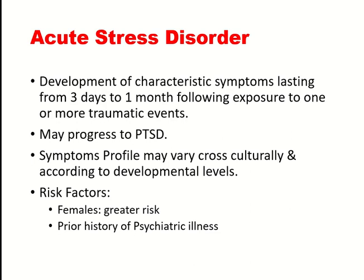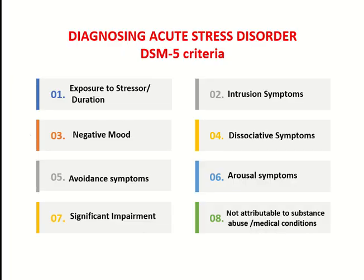For diagnosis of acute stress disorder in DSM-5, there needs to be exposure to a stressor with symptoms present for three days to one month following that exposure. Intrusion symptoms must be present, including recurrent intrusive distressing memories of the traumatic event, recurrent distressing dreams related to the event, and sometimes dissociative reactions like flashbacks. There can also be intense and prolonged psychological distress in response to internal or external cues that resemble an aspect of the traumatic event.